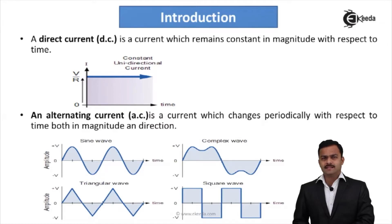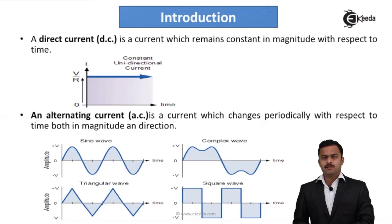If you check the graph, at every instant we are getting a different magnitude. The magnitude starts from zero, slowly increases to its maximum value, then decreases back to zero, increases in the negative direction to its negative maximum, then decreases back to zero. This particular pattern repeats alternatively and periodically.